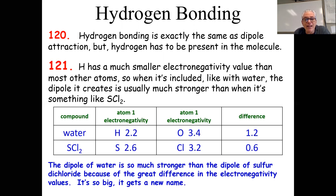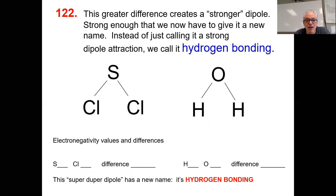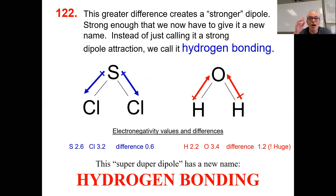SCl₂ has a 0.6 electronegativity difference; water has a 1.2 difference — that's really polar, making water molecules stick together way stronger than SCl₂. What causes this? Polar bonds and polar molecules. Water has greater bond polarity so its molecule is more polar than sulfur dichloride. We get weak dipole for SCl₂ and strong dipole — hydrogen bonding — for water. Hydrogen bonding is really super duper dipole: the same thing, except hydrogen is present.